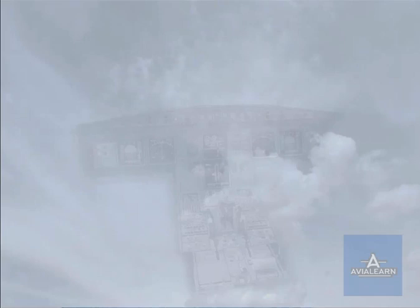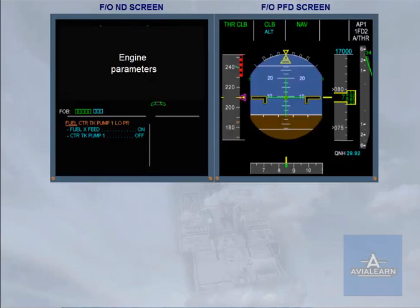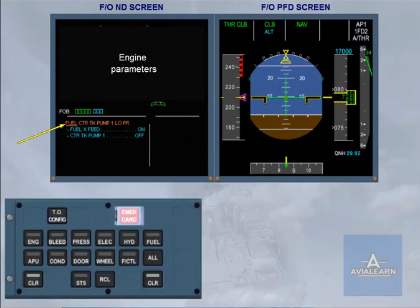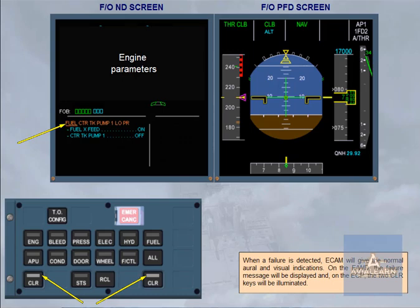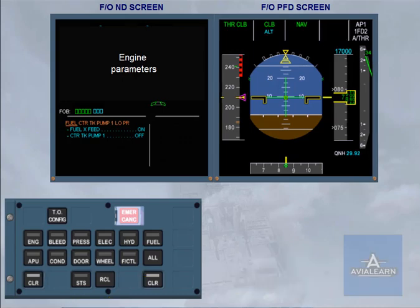When a failure is detected, ECAM will give the normal oral and visual indications. On the engine warning display, the failure message will be displayed and on the ECP, the two clear keys will be illuminated. By looking at the underlined system title, you can see which system page needs to be viewed.